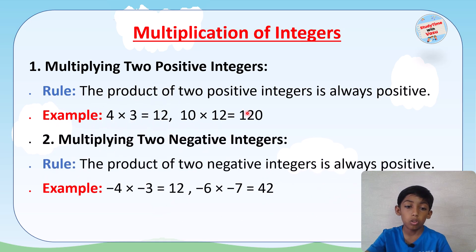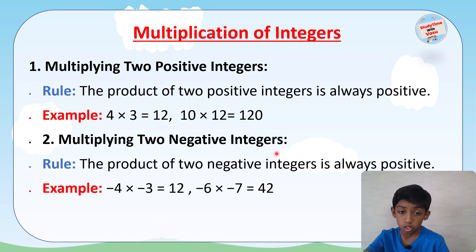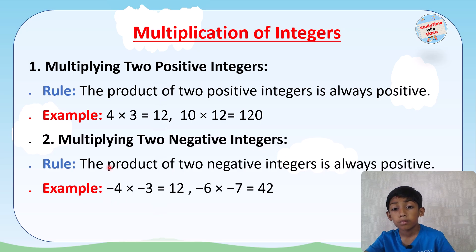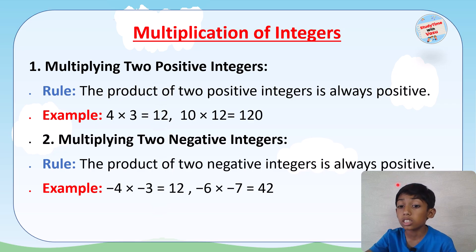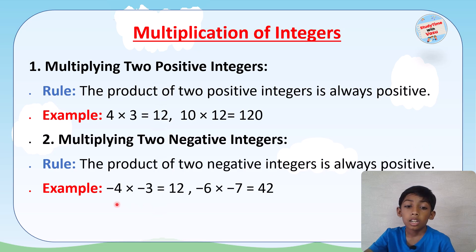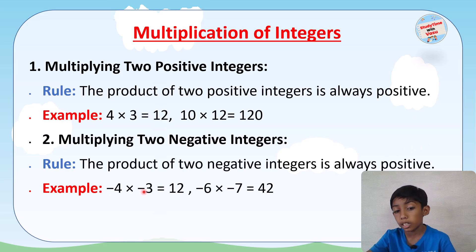The next rule: if you want to multiply two negative integers, the rule is that the product is always again positive. Like in this example, (−4) × (−3) equals 12.